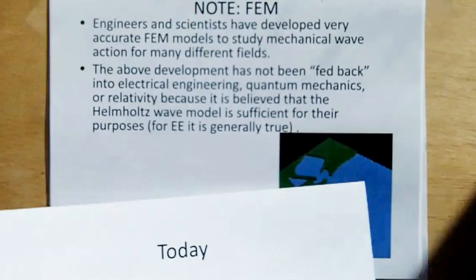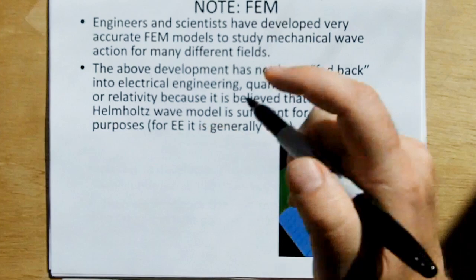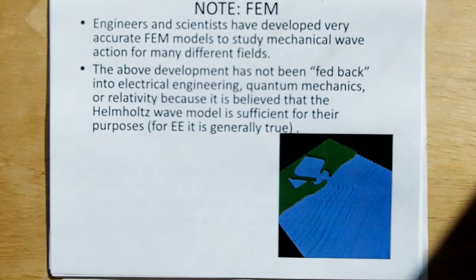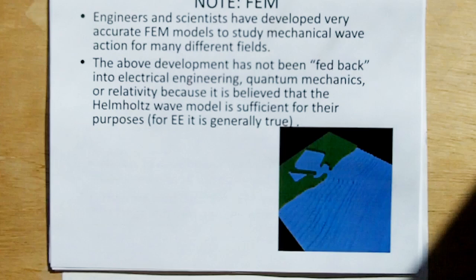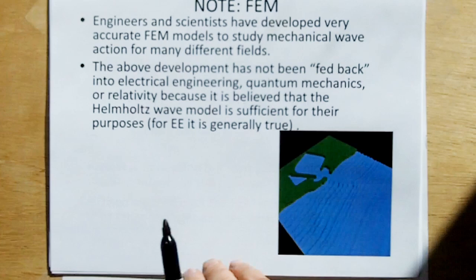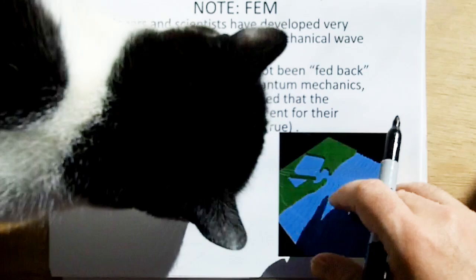Now, with that said, this is finite element modeling. Engineers and scientists have developed very accurate finite element models to study mechanical wave action for many different fields, like beach erosion, for tsunami modeling. But this development has not been fed back into quantum mechanics, electrical engineering, relativity, because these fields believe that the Helmholtz wave model is sufficient for all their needs and purposes. And for electrical engineering, I would say the Helmholtz wave model for most of the stuff that electrical engineers do is perfectly fine.